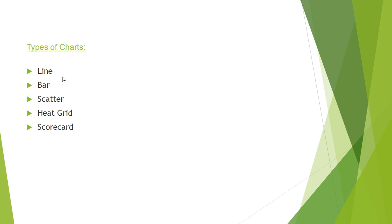Let's move to the next slide. What are the different types of charts available in Snowflake? Majorly we have five types: one is line chart, two is bar chart, third is scatter chart, fourth is heat grid, and fifth is scorecard. We'll do a working session on each and every type of chart available in Snowflake.